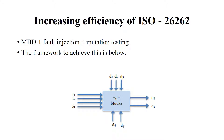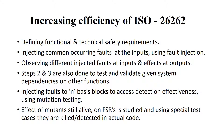The efficiency of the ISO 26262 standard can be increased by combining a model-based design approach with fault injection and mutation testing approaches. This is achieved by defining functional and technical safety requirements, then injecting commonly occurring faults at the inputs using fault injection. Injected faults and their effects are observed at inputs and outputs continuously. Faults are also injected into N basic blocks to observe detection effectiveness using mutation testing. If any mutants are still alive, their effect on functional safety requirements is studied and using special test cases, they are killed and detected in actual code.